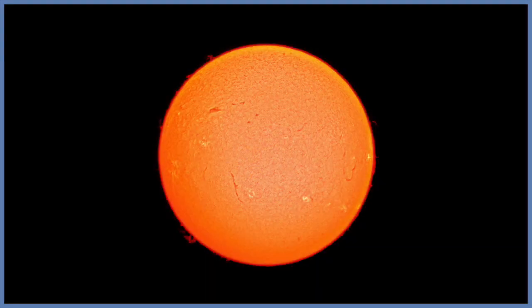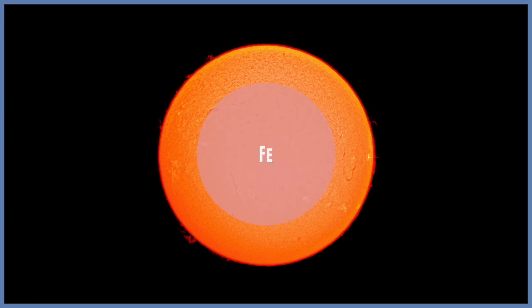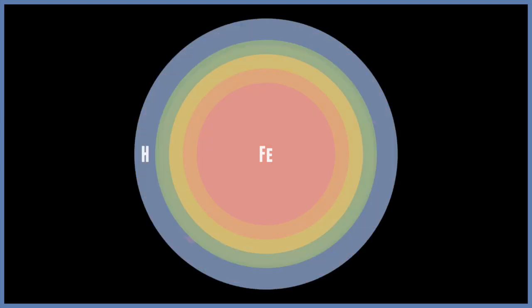Another type of supernova explosion takes place when a core of a massive star runs out of nuclear fuel. At this point in the star's lifetime, the core of the star is mostly made of iron, with layers of lighter elements on top of it.